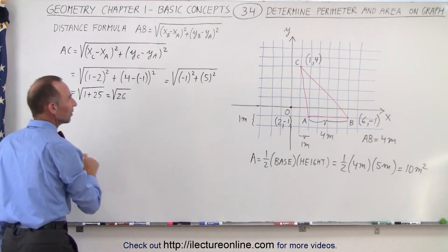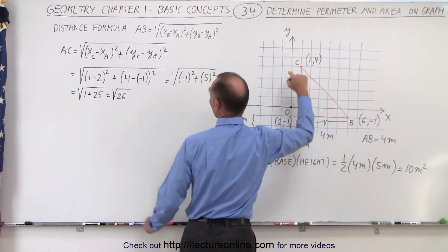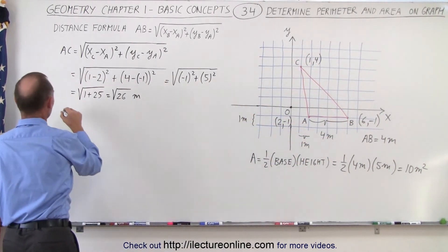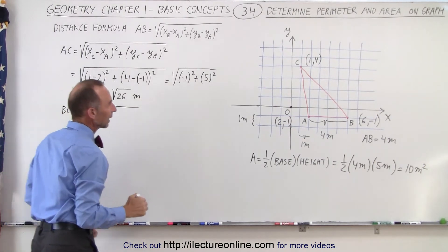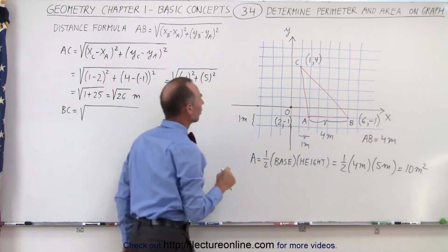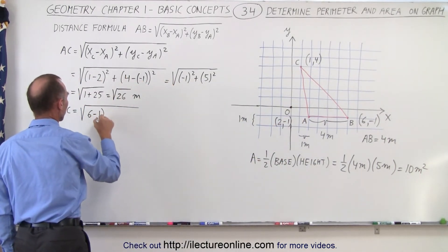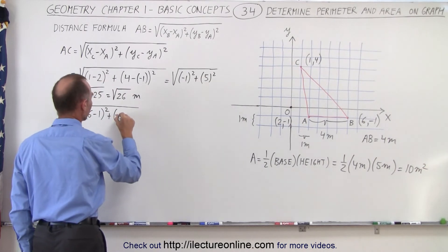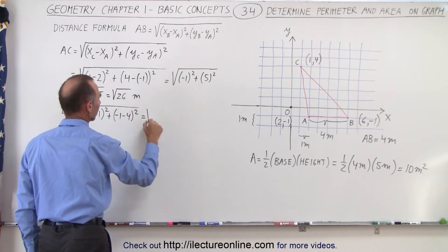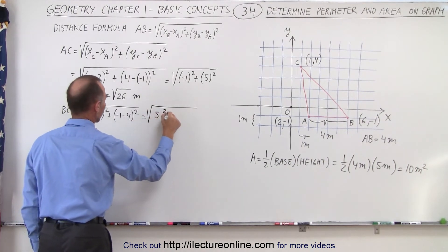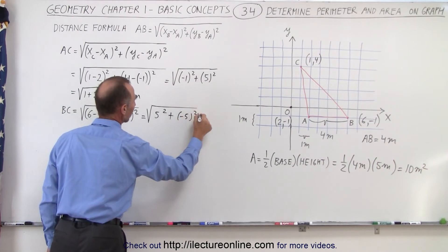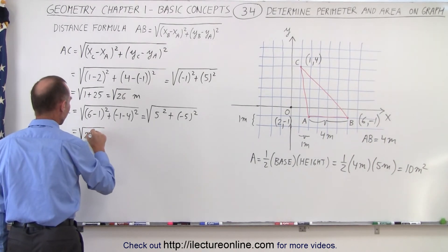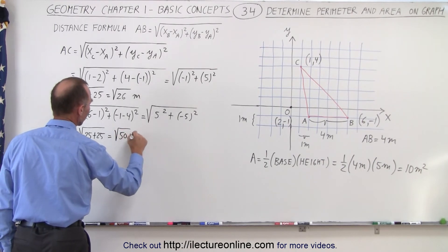Now we find the length from B to C. That equals the square root of (x_B minus x_C) squared plus (y_B minus y_C) squared: the square root of (6 minus 1) squared plus (minus 1 minus 4) squared. That's the square root of 5 squared plus minus 5 squared. Again, it doesn't matter if it's negative since we're squaring it. So this equals the square root of 25 plus 25, which is the square root of 50 meters.